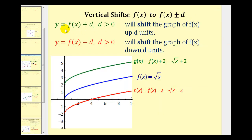So to summarize this: if we have y equals f of x plus d, where d is positive, the parent function will be shifted up d units, as we see here in green — g of x equals f of x plus two, equal to the square root of x plus two. And if we have y equals f of x minus d, again where d is positive, we would have a shift of the function down d units, which in our case was h of x equals the square root of x minus two.